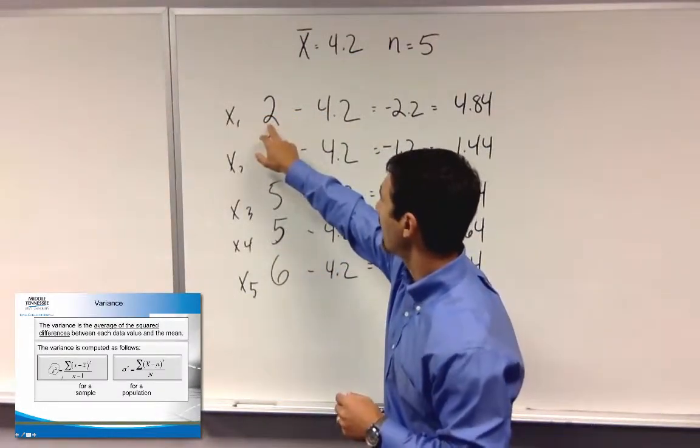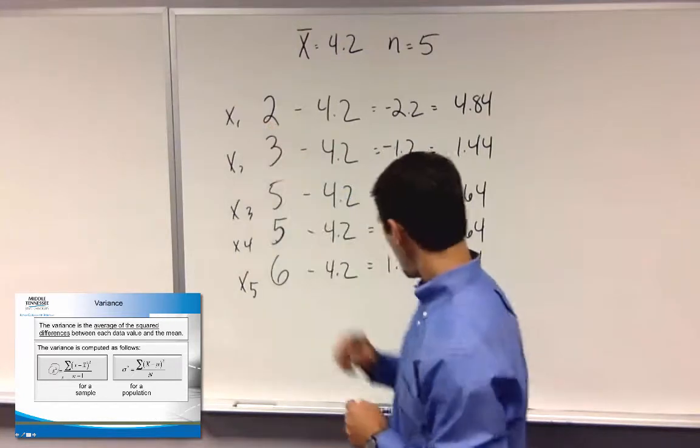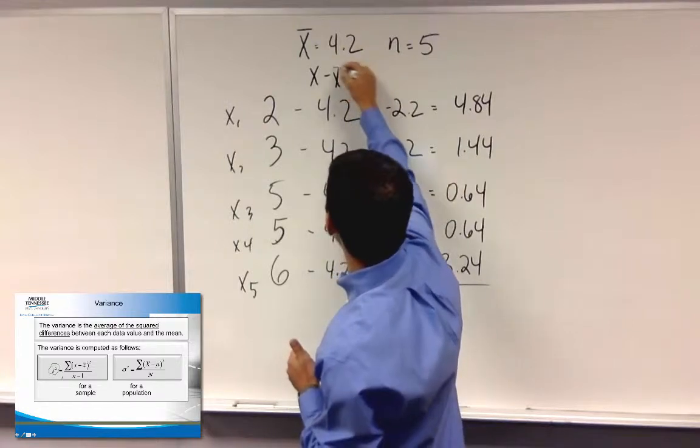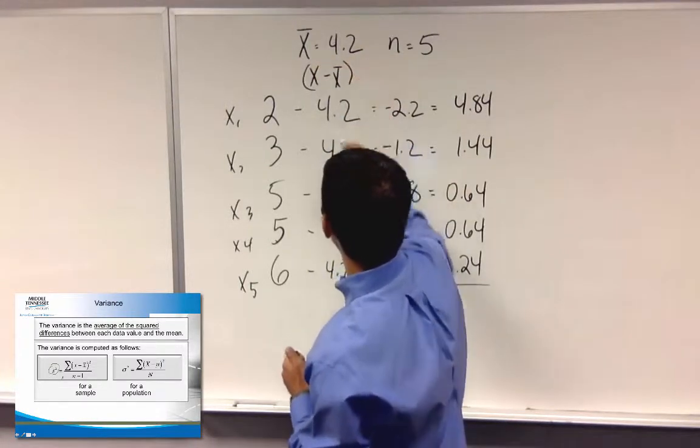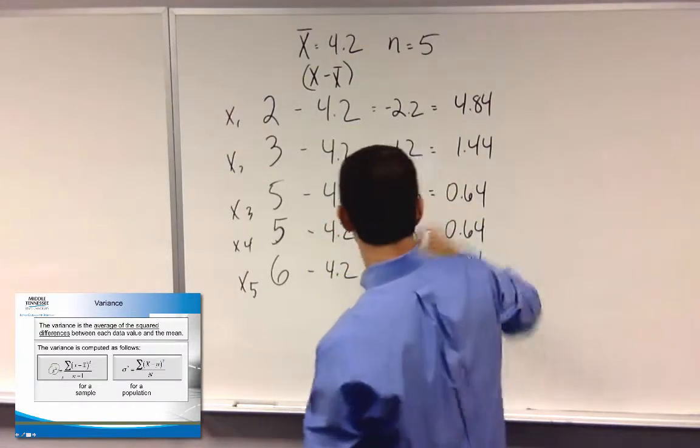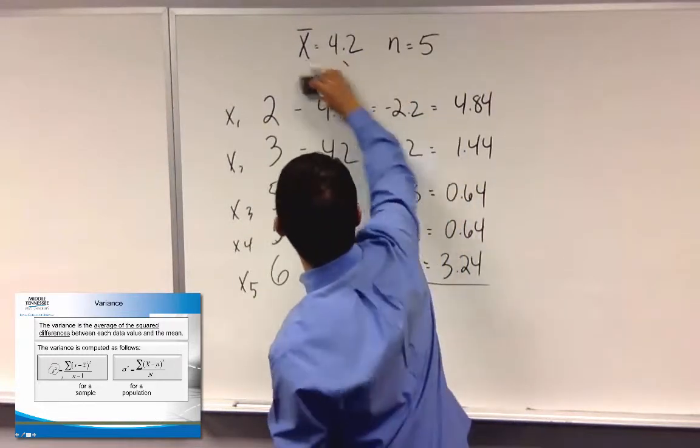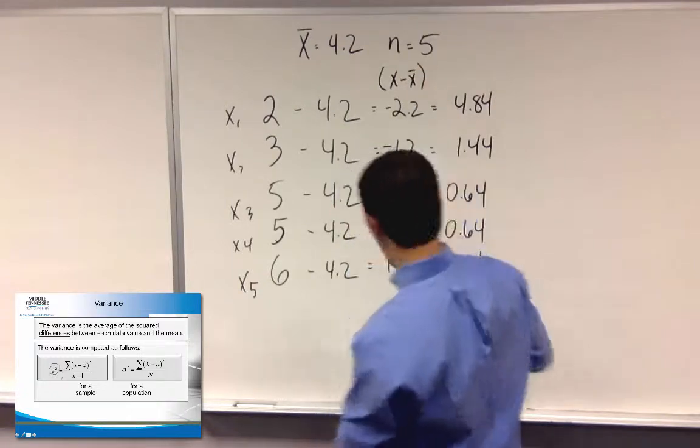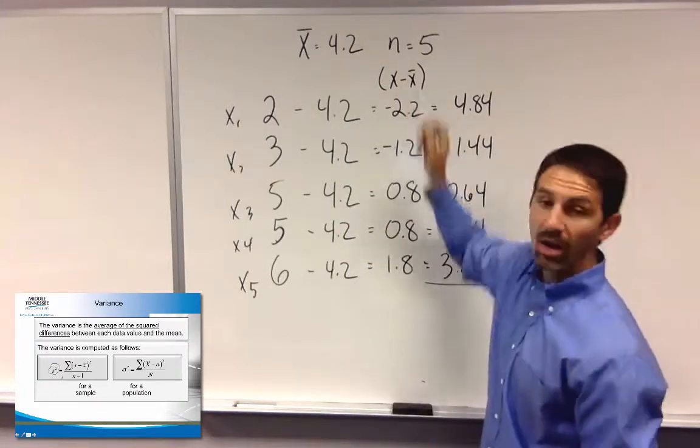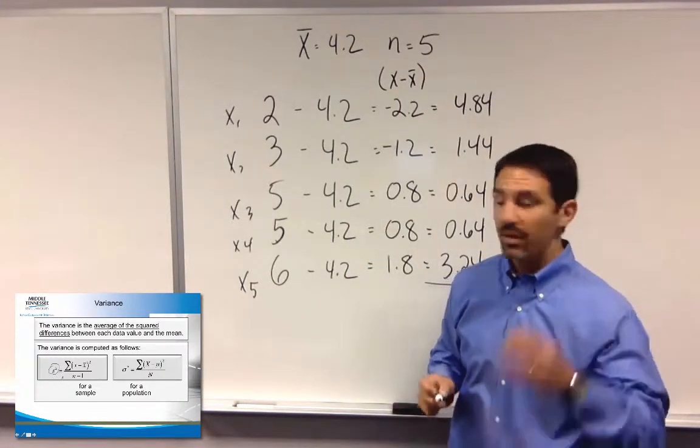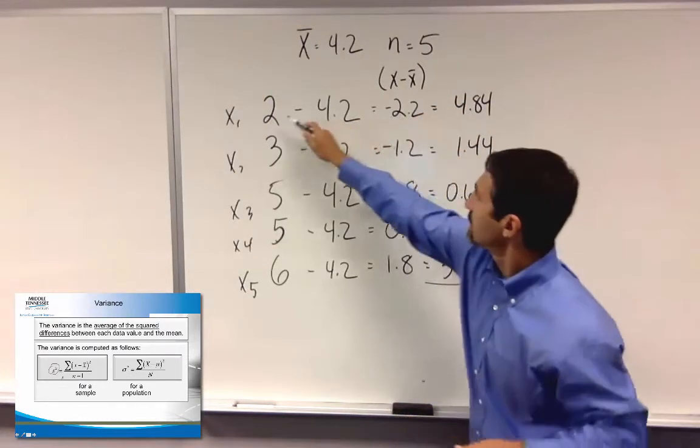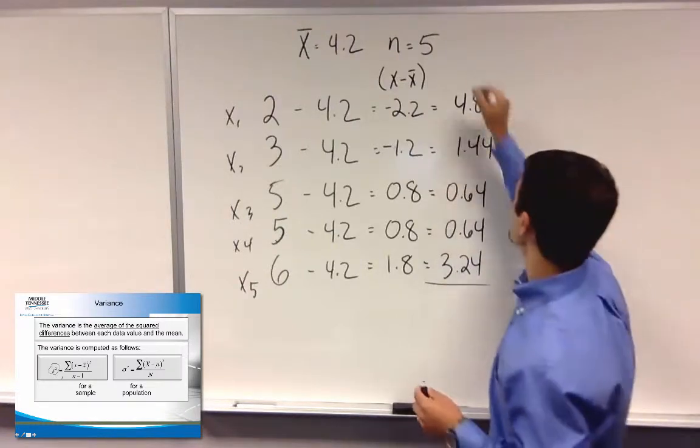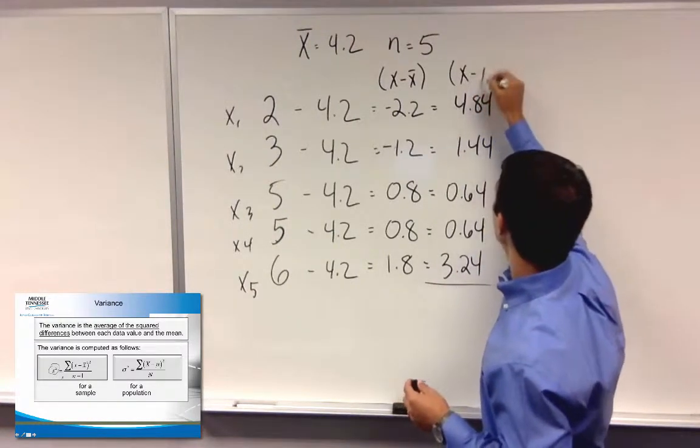You can see I've got my value of 2, and then for that I take x minus x bar, and that gives me that part of my equation. Well then I need to square it. So if I take 2 minus 4.2, it gives me a negative 2.2.